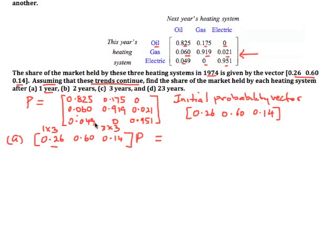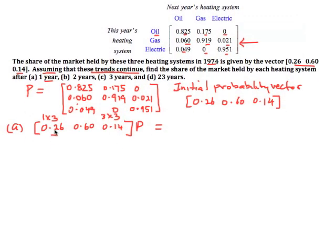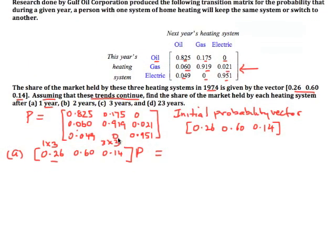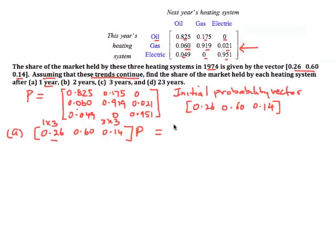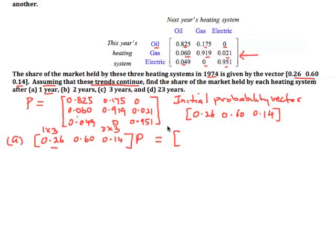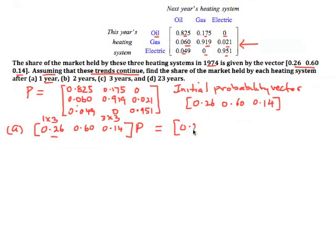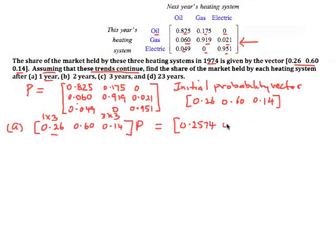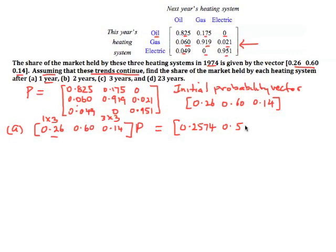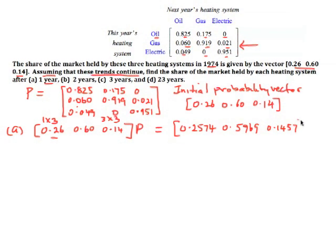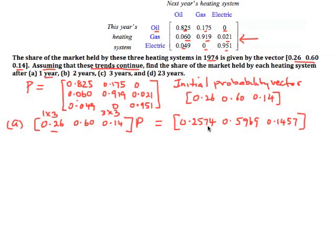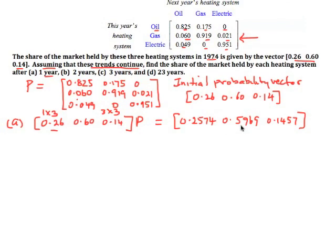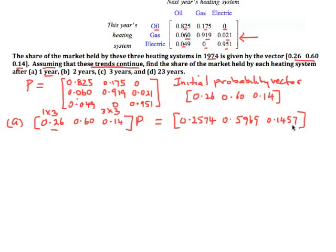Our result should be a 1 by 3 matrix. We get 0.26 multiplied by 0.825 plus 0.6 by 0.06 plus 0.14 by 0.04, and so on for each column. When you do that, you get a 1 by 3 matrix: 0.2574, 0.5969, and 0.1457. This tells us that after one year, oil will have 25.74% of the market, gas 59.69%, and electric 14.57%.